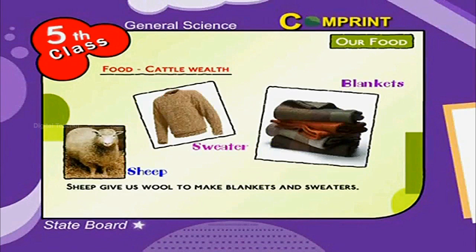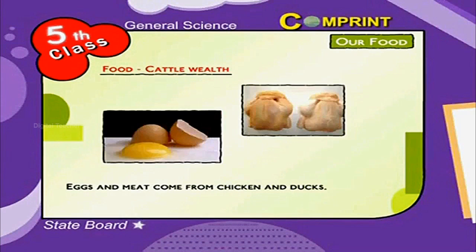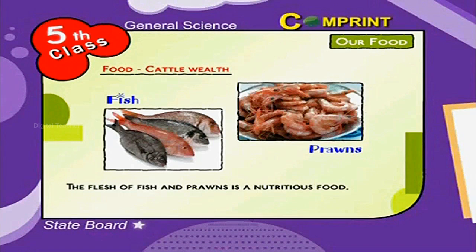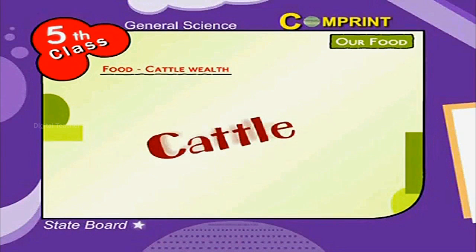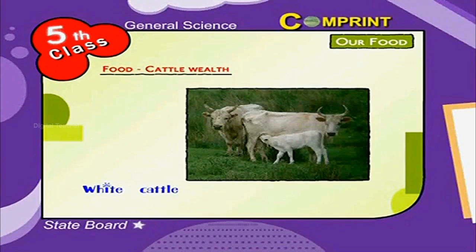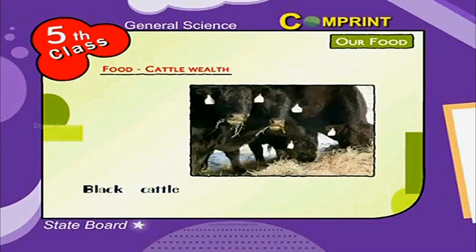Goats and sheep are the base for the leather industry. Sheep gives us wool to make blankets and sweaters. Eggs and meat come from chicken and ducks. The flesh of fish and prawns is a nutritious food. Cattle are divided into white and black. White cattle are cows and bulls. Black cattle are hay buffaloes and she-buffaloes.